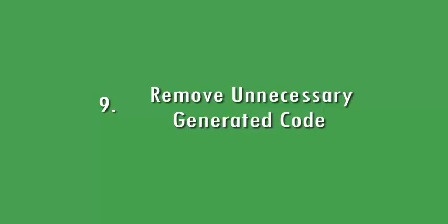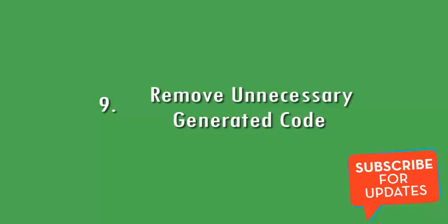Remove unnecessary generated code. Unnecessary code count is considered in the application's classes.dex file at the time of APK generation. If you are using unwanted code and forgot to remove it from your application, it is taken into consideration during APK generation and increases the overall file size. Make sure to remove unnecessary generated code. That's all, guys — hope you understood what all factors are involved while creating an optimized APK. Don't forget to like, share, and subscribe to my channel. Thank you.